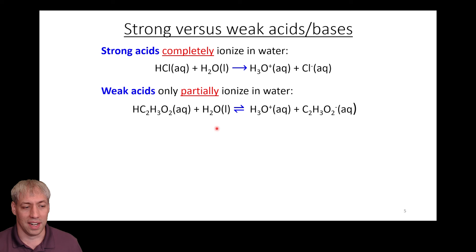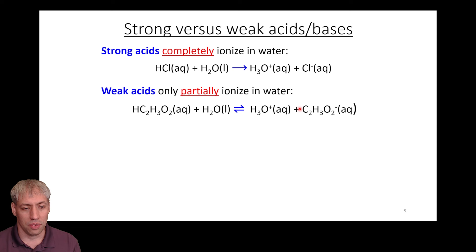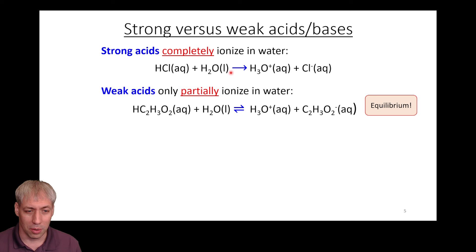Acetic acid plus H2O gives you H3O+ and C2H3O2-. There's the acid, there's the conjugate base. It doesn't go completely — it's not as strong as HCl. This is a weak acid; it only goes a little bit this way. For something like HCl, a strong acid, we draw a unidirectional arrow because it almost all goes this way. For weak acids, we have a combination of all these things, and that depends on how strong that acid is.